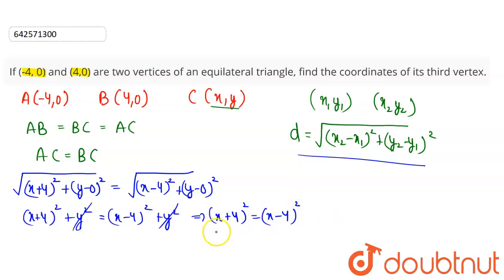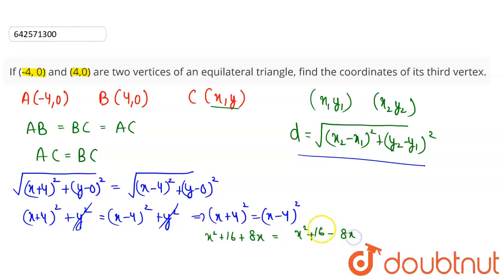Expanding using (a + b)² and (a − b)²: x² + 16 + 8x = x² + 16 − 8x. The x² and 16 terms cancel, giving 16x = 0, so x = 0.